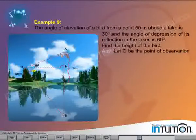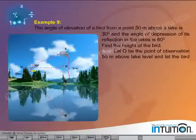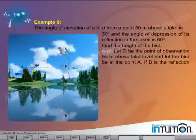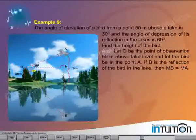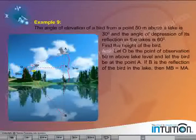Let O be the point of observation 50 meters above the lake level, and let the bird be at point A. If B is the reflection of the bird in the lake, then MB is equal to MA.